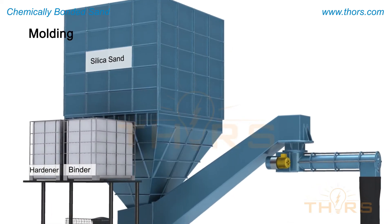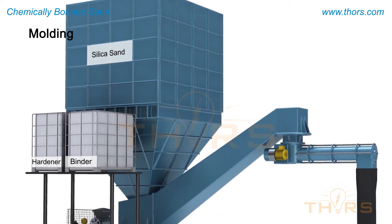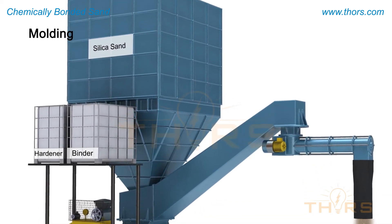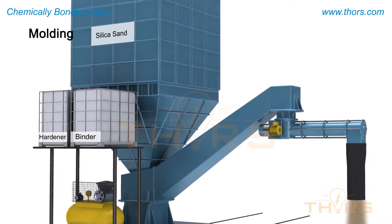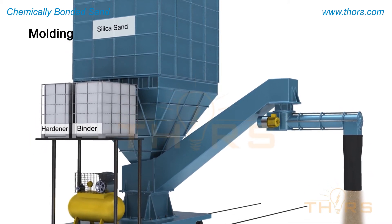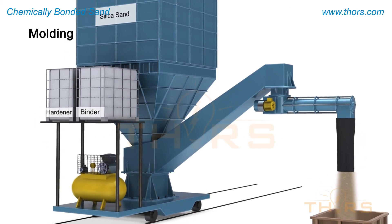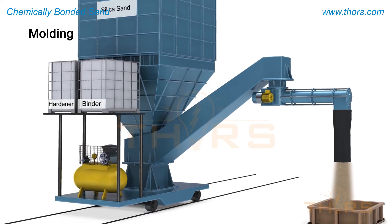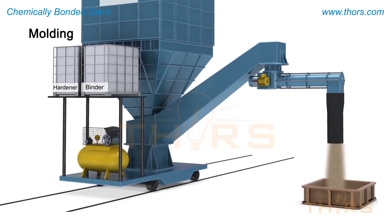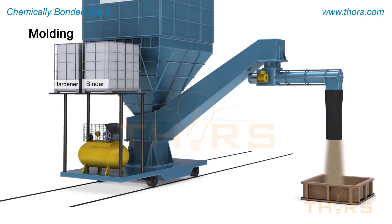Next, the sand is coated with liquid binders and hardeners using high-speed mixing equipment, also referred to as mixers. The mixing process is extremely important as it ensures all the sand grains are completely and uniformly coated with the binders and hardeners.